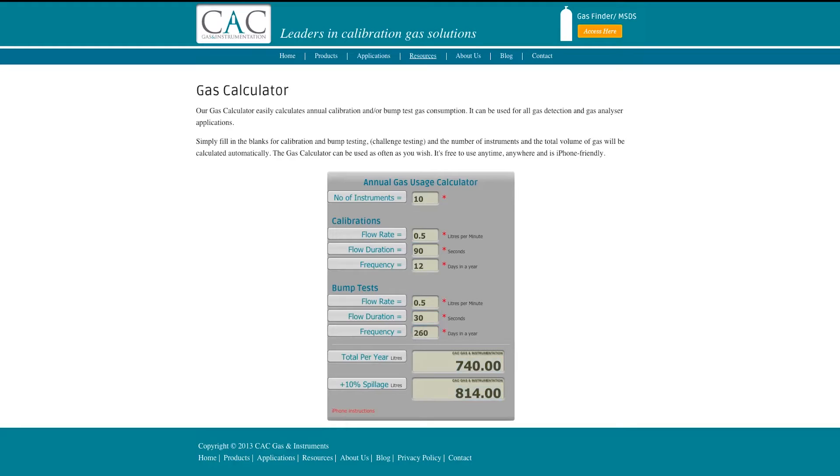If this was for a 4 gas mixture with a 2 year shelf life, simply double this number in order to find out what the most efficient cylinder size would be for the application. For this example, a 1500 litre cylinder would be the correct choice.